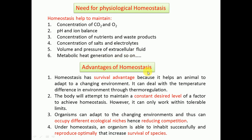What are the advantages of homeostasis? Homeostasis gives an organism a survival advantage by helping it adapt to a changing environment — for example, dealing with temperature differences through thermoregulation. The body attempts to maintain a constant desired level to achieve homeostasis, though it can only work within tolerable limits. Organisms can adapt to changing environments, occupy different ecological niches, and reduce competition, allowing more survival chances. Under homeostasis, an organism can inhabit successfully and reproduce optimally, increasing the survival of the species.